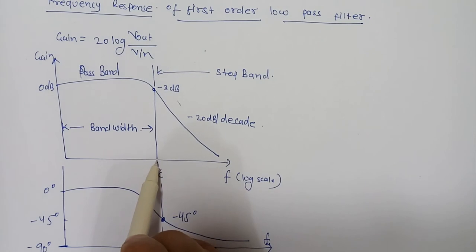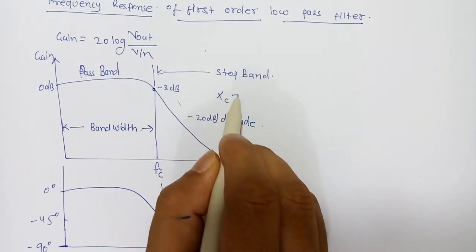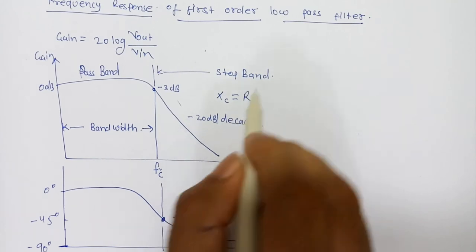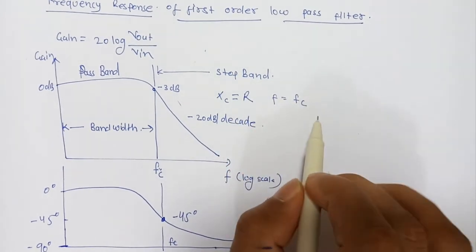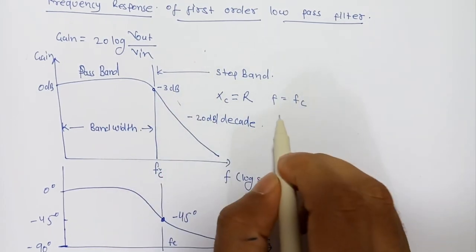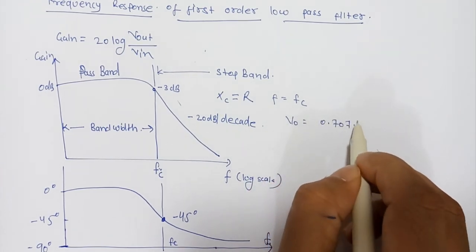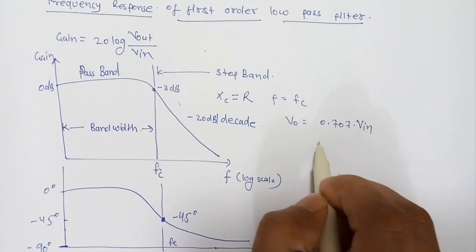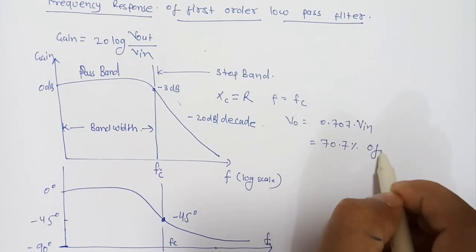The cutoff, corner, or breakpoint frequency is defined as the frequency point where the capacitive reactance and the resistance are the same. So Xc and R will be the same at F = Fc. Of course this is also known as the -3 dB point, or you can say the output will be 0.707 times the input, or 70.7% of input.